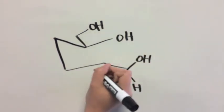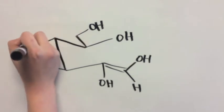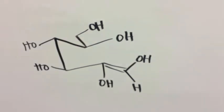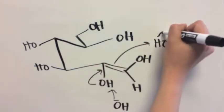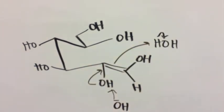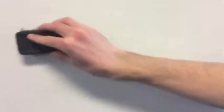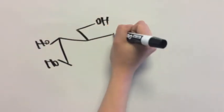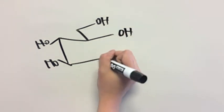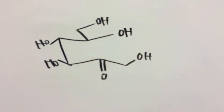Through tautomerization, this will now form a ketone. With this base deprotonating this alcohol, forming a ketone. That's a nice-looking ketone.